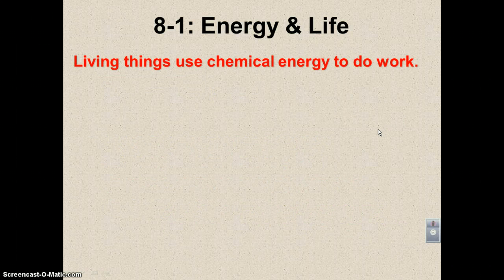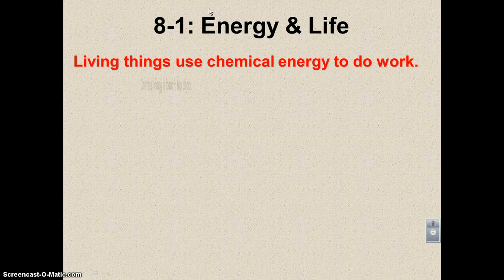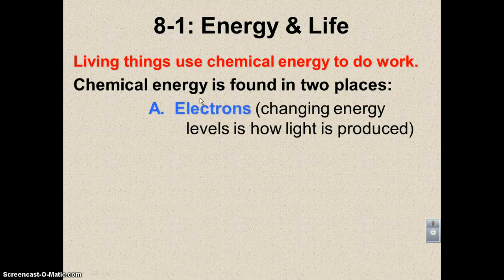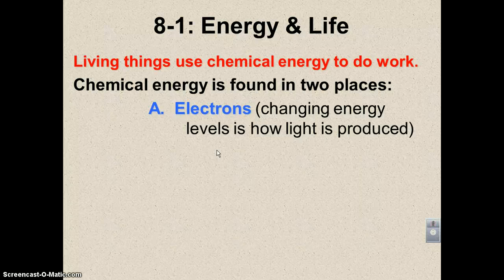Living things must use chemical energy. Chemical energy is going to be found in two places. Number one is electrons — electrons contain a lot of energy. If you remember from chapter two when we talked about atomic structure, the electrons were found in an energy level. Changing energy levels is how light is produced.